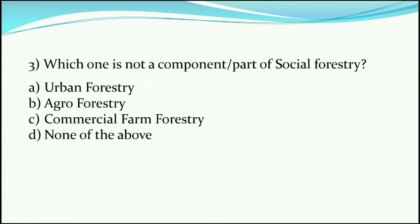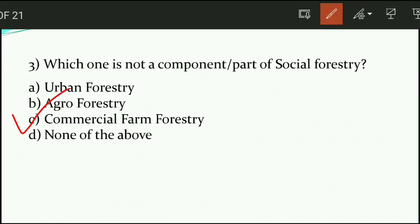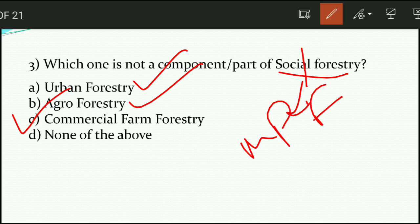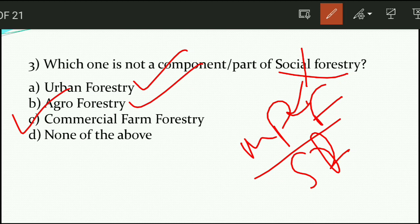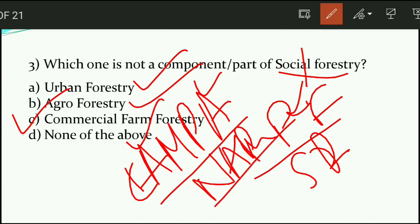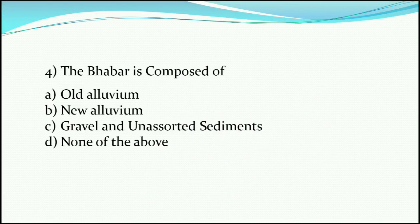Question number three: which one is not a component or part of social forestry? The answer will be option C — commercial farm forestry. Social forestry includes urban forestry and agroforestry; it does not include commercial forestry. Social forestry is the management and protection of forests and helps the environment socially while also aiding rural development. The Government of India has launched schemes for social forestry, including the most famous one — CAMPA, which is for afforestation fund management — as well as NAP.